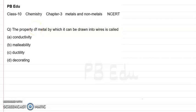Hello and welcome to PBEDU YouTube channel. Here we solve all your doubts related to your school chemistry. Today we have a question on metals and non-metals. The question is: the property of metal by which it can be drawn into wires is called what?